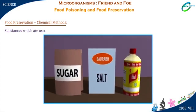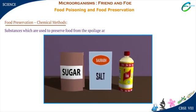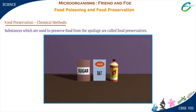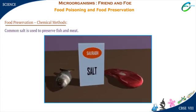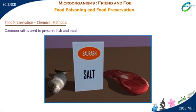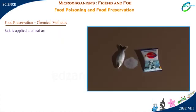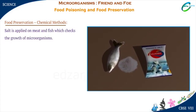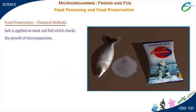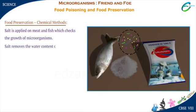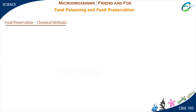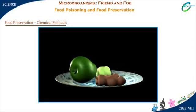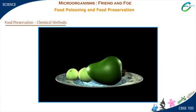Substances which are used to preserve food from the spoilage are called food preservatives. Common salt is used to preserve fish and meat. Salt is applied on meat and fish which checks the growth of microorganisms. Salt removes the water content of microorganisms present in fish and meat and hence controls their growth. Amla, raw mangoes and tamarind are also preserved by using common salt.